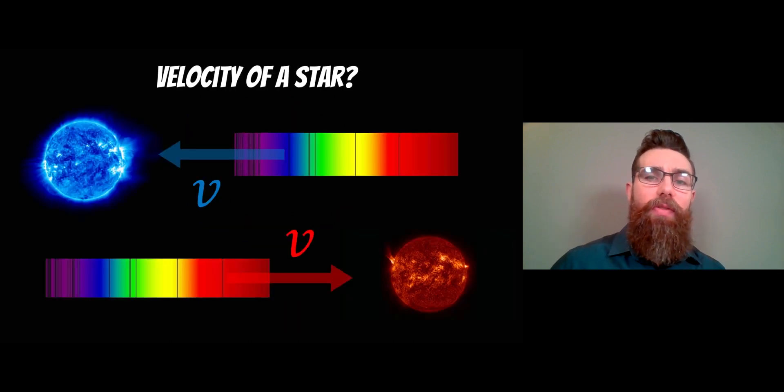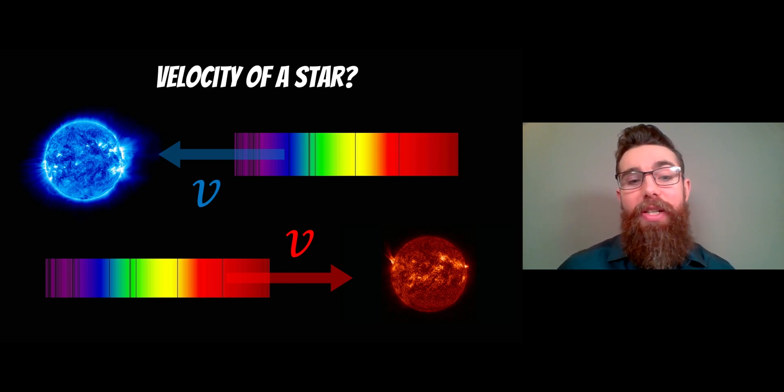We can get the velocity of the stars fairly easily. We can use the Doppler effect to work out how fast they're moving by a shift in their light that we see. If a star is moving away from us it's going to be red shifted. If it's traveling towards us it becomes blue shifted, and we can measure the shift in that light in order to work out how fast they're actually moving.